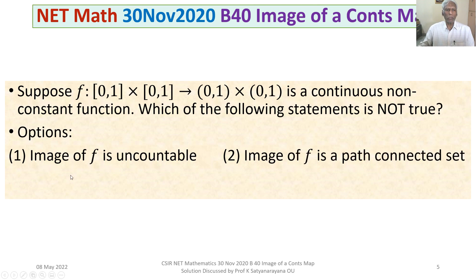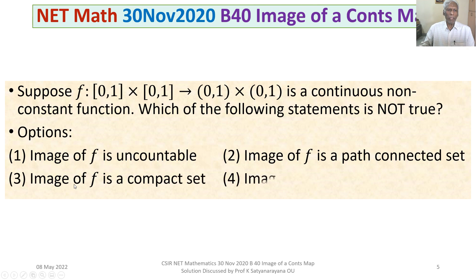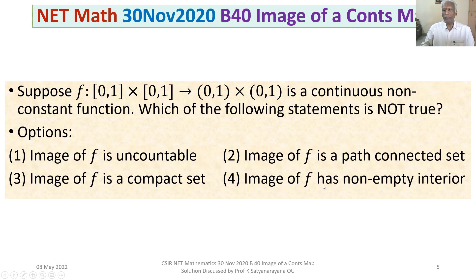The four options are given to us. Option 1: the image of f is uncountable. Option 2: the image of f is a path-connected set. Option 3: the image of f is a compact set. Option 4: the image of f has non-empty interior.